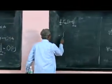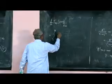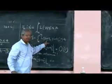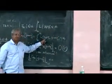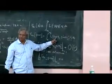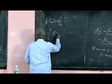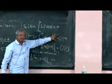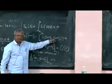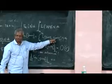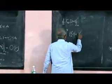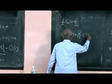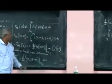So let's write down everything. x_a to x_b — the limits there. So the first term will be partial derivative of this with respect to y, into derivative of this with respect to epsilon, that will produce an η. Plus derivative with respect to this variable, dl by dy prime, into derivative of this quantity with respect to epsilon — that is η prime. So you get dl by dy prime into dx.